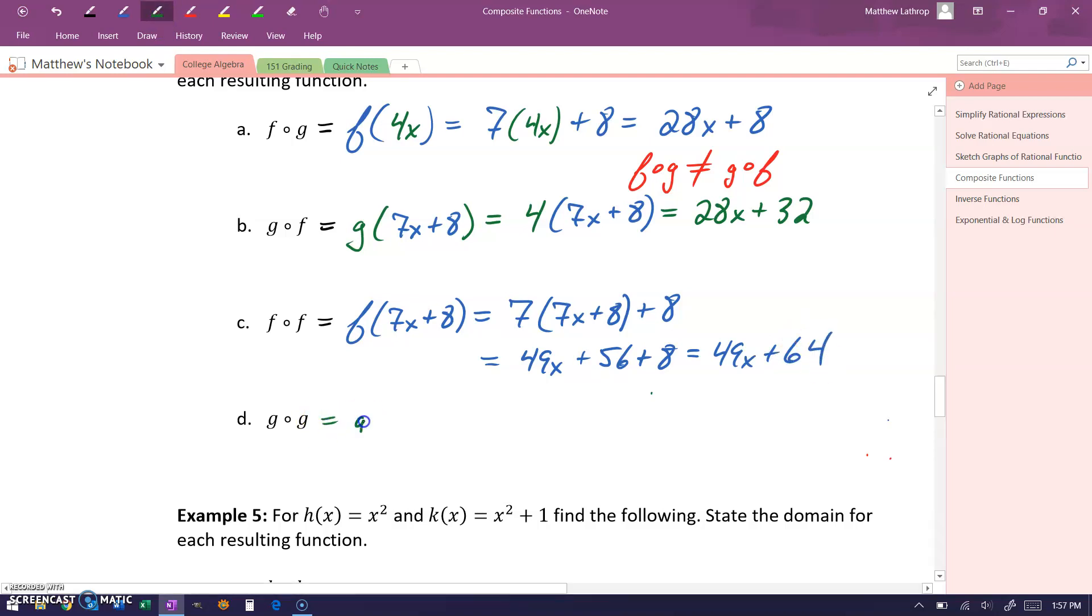Similarly in part d, we can take our function g of x and construct its composition with g of x with itself. So we would be taking that function g and evaluating it at 4x to get four times the quantity 4x, or 16x.